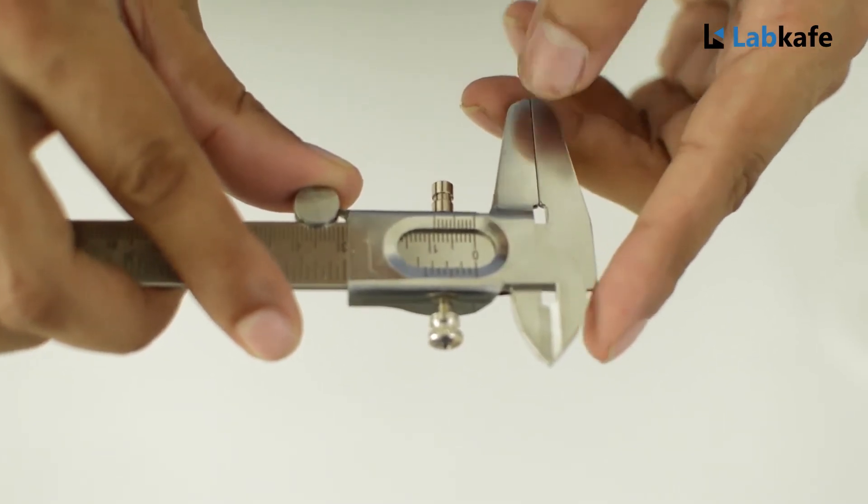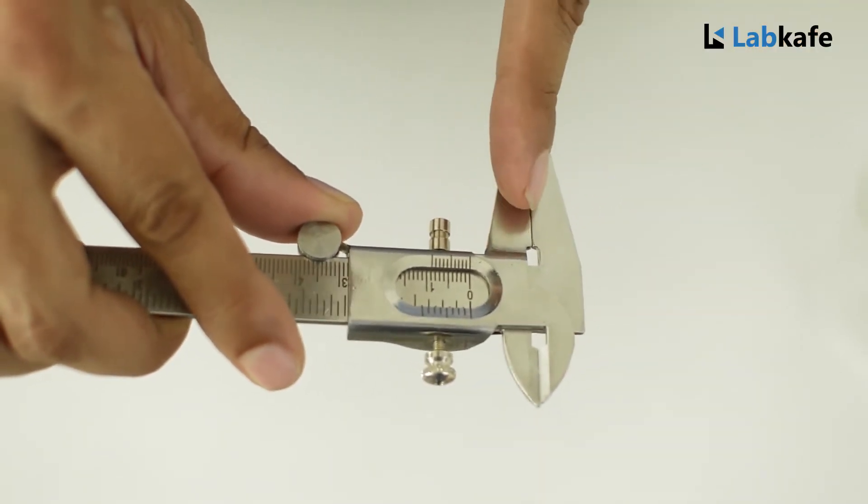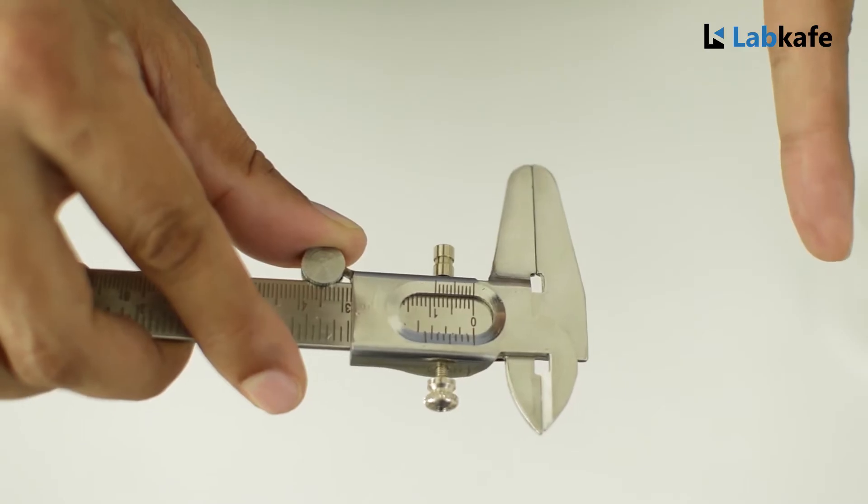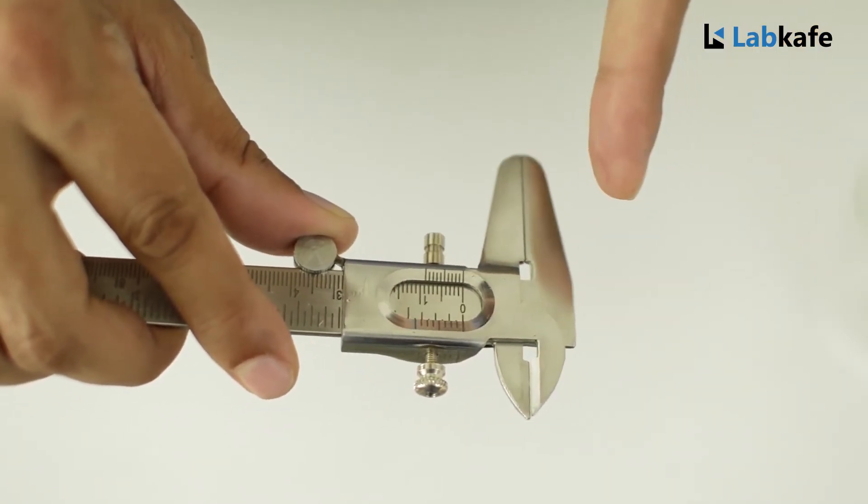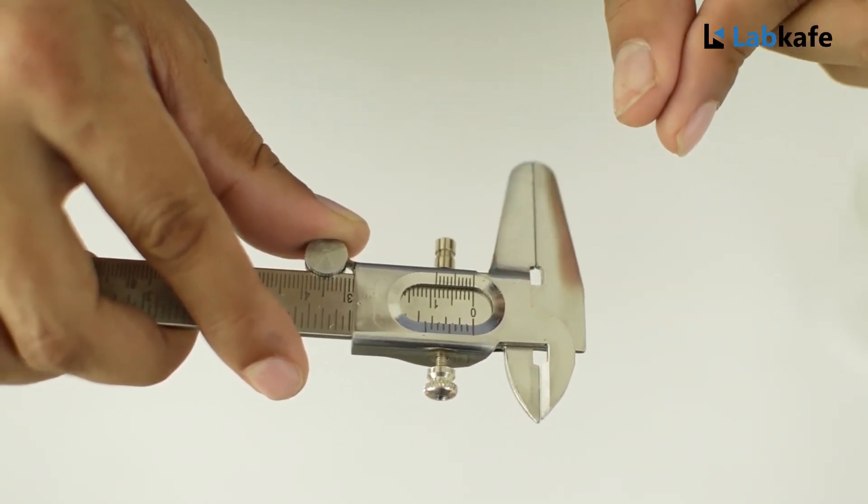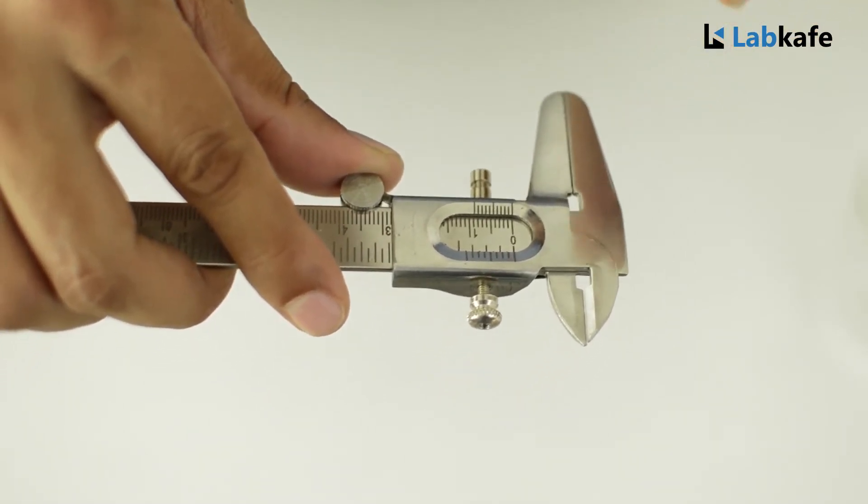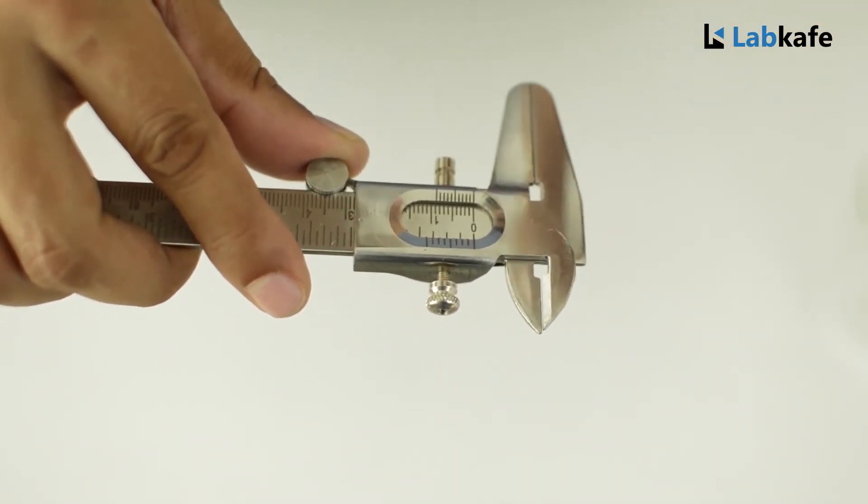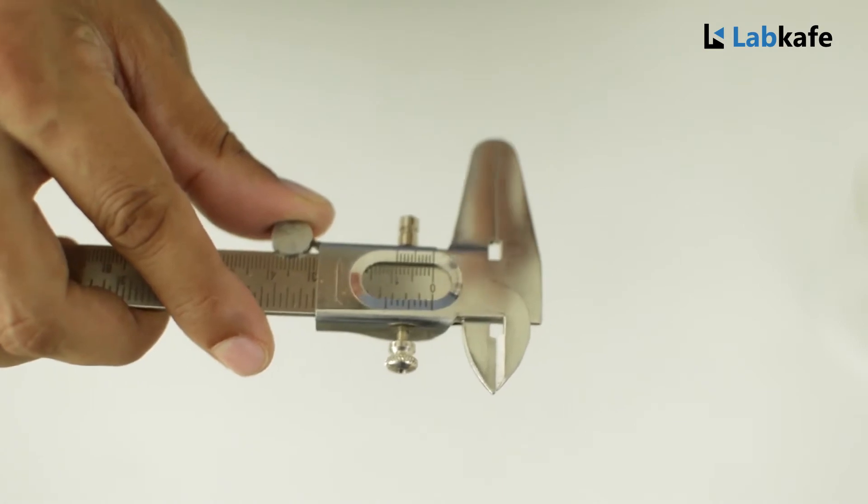The zero error is negative when the zero mark of the vernier scale shifts towards the left side of the zero of the main scale when the jaws are made to touch each other. In such case, we have to add the negative error to the actual reading.